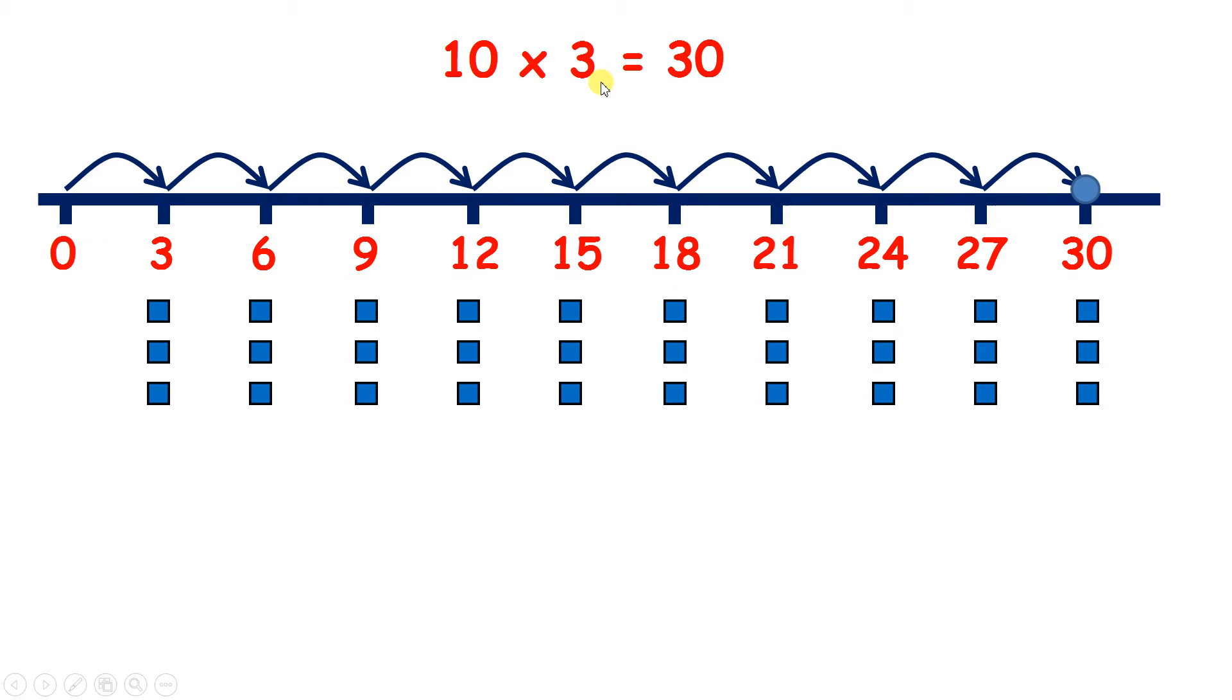It gives us the same answer as 3 times 10. And that's the interesting thing with multiplication. It's like addition in that order doesn't really matter. You get the same answer whichever way round you multiply the numbers. So 10 times 3 is 30, but we also know 3 times 10 is 30. And maybe that would have been a quicker way to find out our answer.